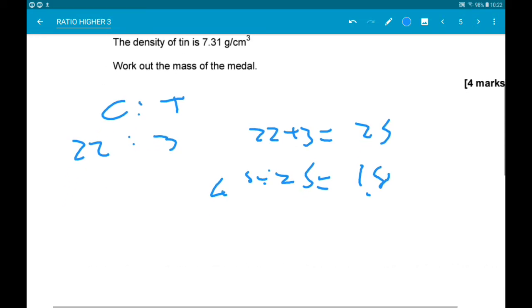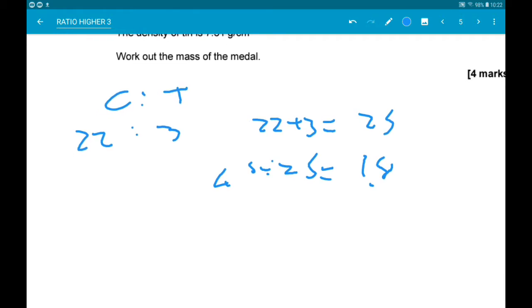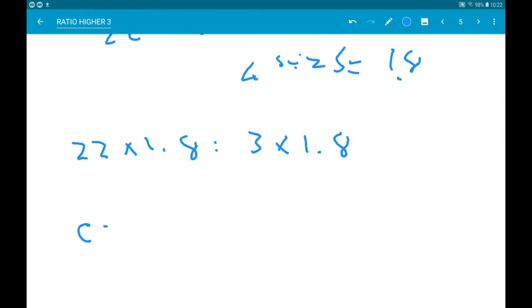So we then multiply each side of the ratio by 1.8. So we've got 22 times 1.8 to 3 times 1.8. So we get copper is 39.6 centimetres cubed, and tin is 5.4 centimetres cubed.